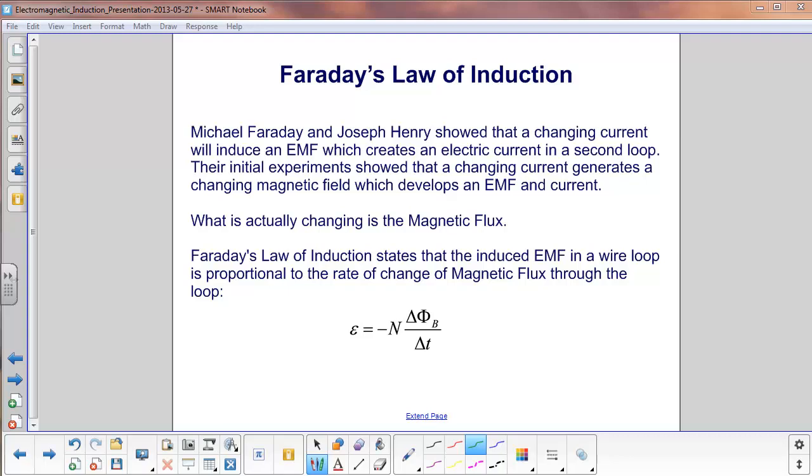Michael Faraday and Joseph Henry independently showed that a changing current will induce an EMF, which will create an electric current in a second loop. And remember, the second loop, there's no battery, nothing, just wire and an ammeter.